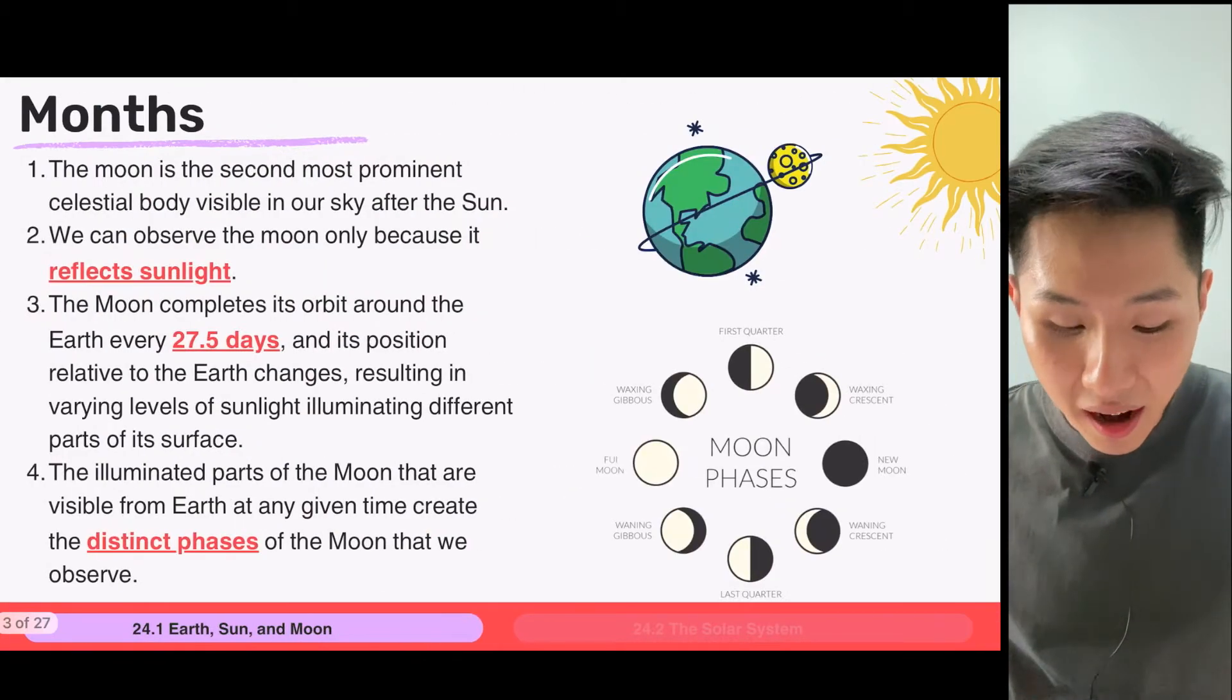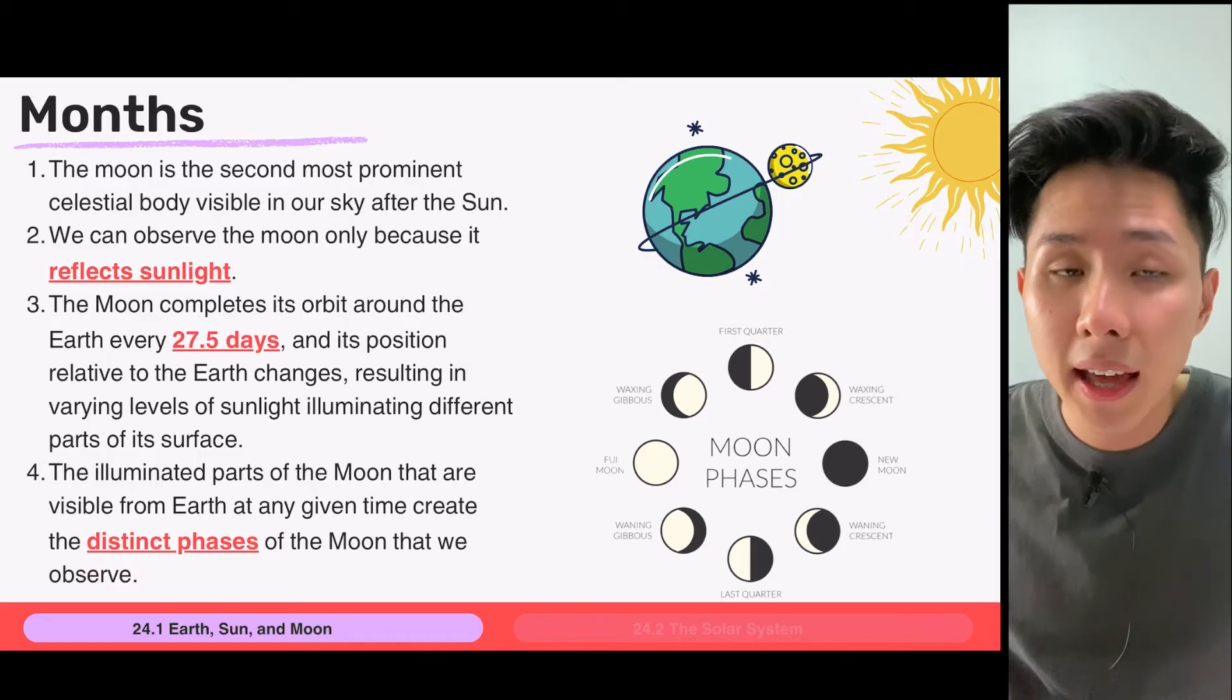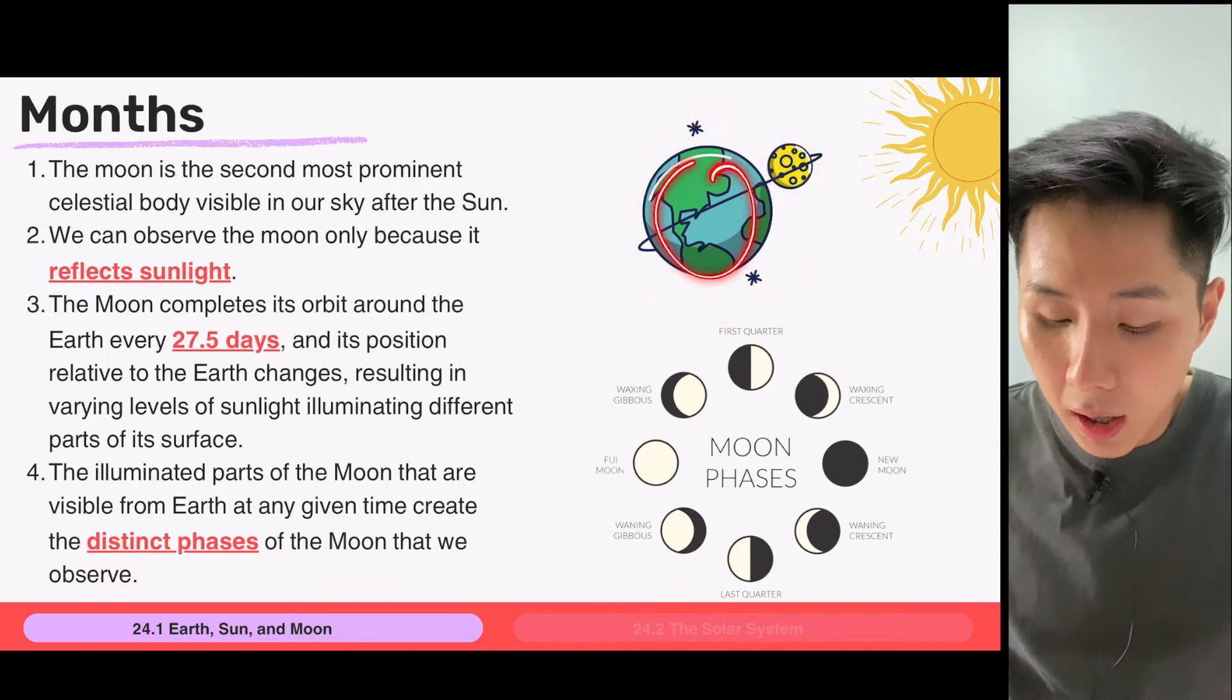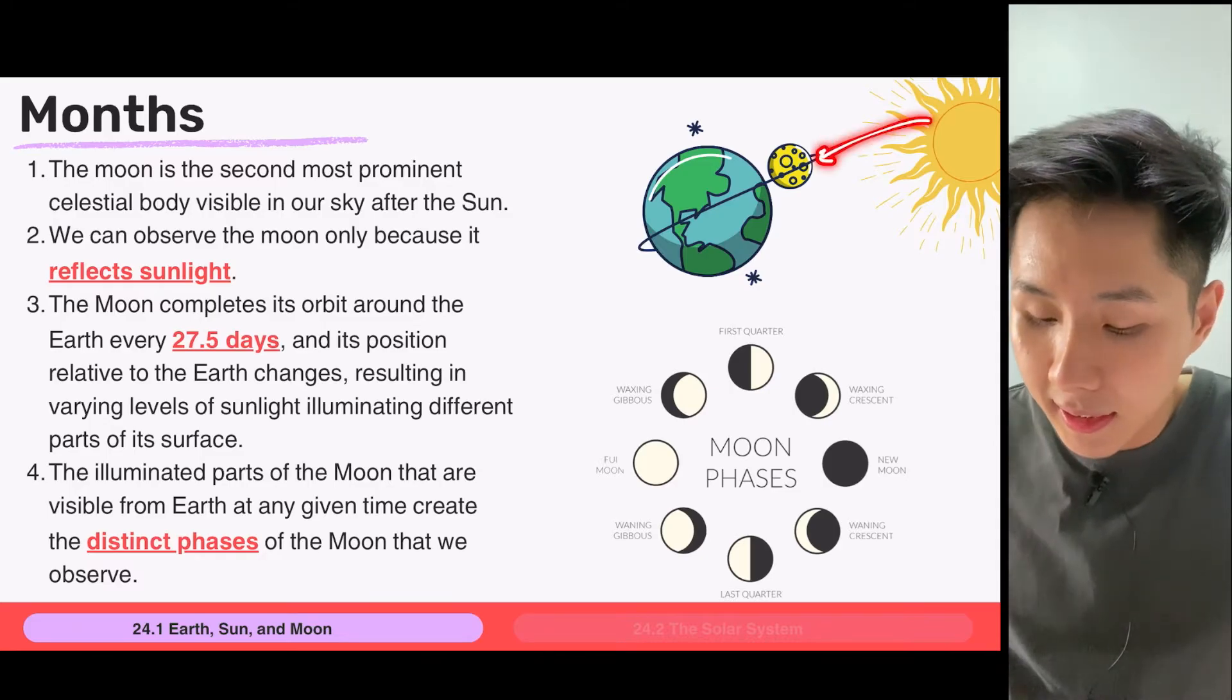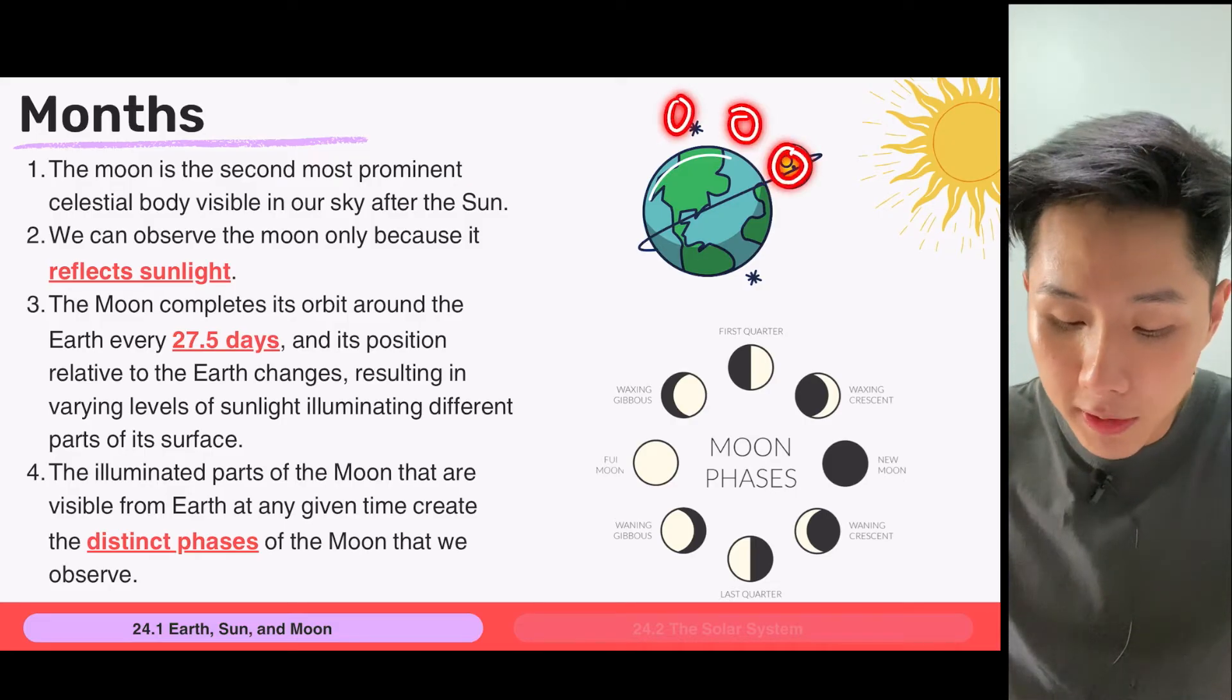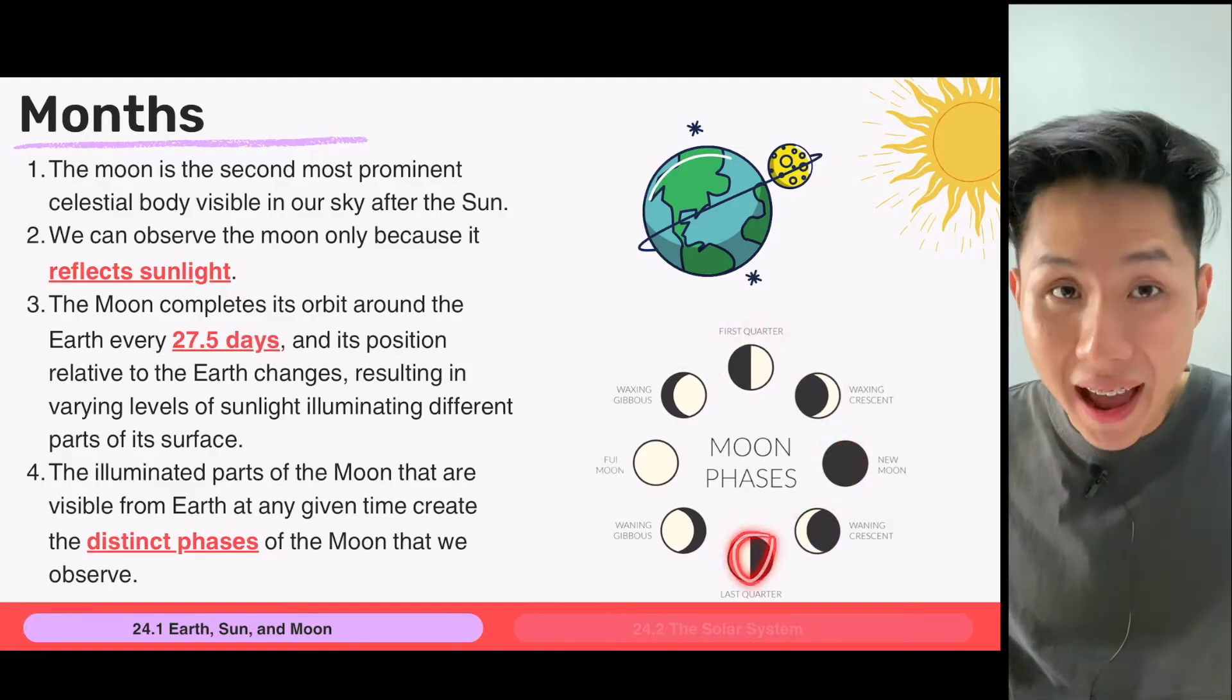And as for months, as you all know, as the day goes on in a month, we will see different versions of the Moon. And that's not because the Moon is got eaten by somebody else. That's mainly because of the theory that we have learned called the reflection of light. So I have a diagram here. You can see that Moon is orbiting the Earth.